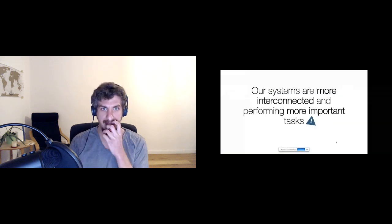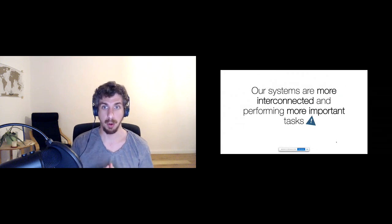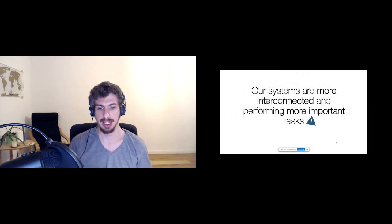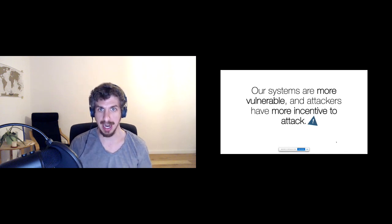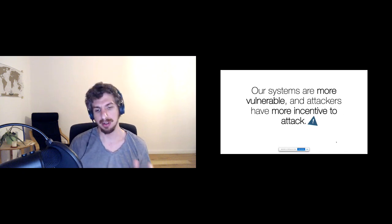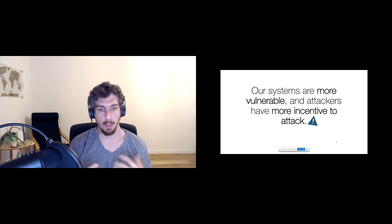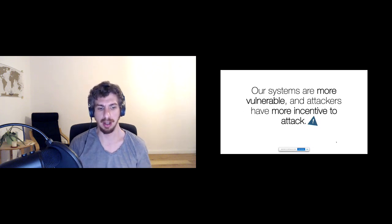What is this problem? It all starts with this simple fact: our systems are more interconnected and performing more and more important tasks every single day. What this translates to is that our systems are more vulnerable, and attackers have even more incentive to attack those systems over time. We're growing our systems together, and with that comes the incentive for attacking from nefarious parties. In terms of numbers, if we graph CVEs —